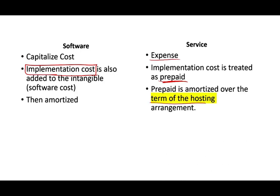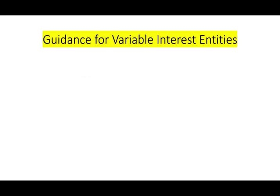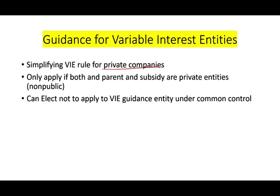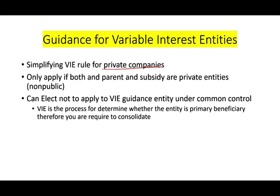The last topic is guidance for variable interest entities. Here we're simplifying the rules again for non-public, which is private companies. This only applies if both the parent and the subsidiaries are private companies. Private companies can now elect not to apply the variable interest entity guidance under common control. The VIE rules are the process to determine whether we are the primary beneficiary of an entity, and if so, we need to consolidate it. The VIE came after Enron. If both companies are private, it's not really necessary to implement those VIE rules.